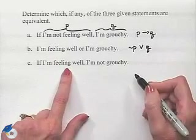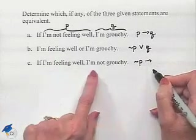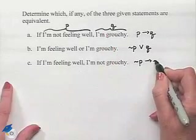If I'm feeling well would be the negation of P. Then, I'm not grouchy would be the negation of Q.